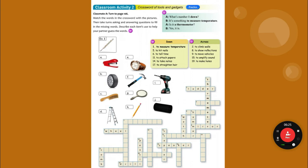Five — to hit nails — is a hammer. Eight is to show reflection — that should be a mirror. To tell time — that's a watch, W-A-T-C-H. The mirror is M-I-R-R-O-R.